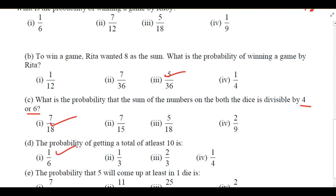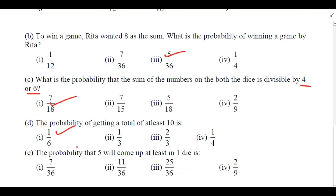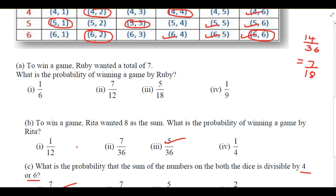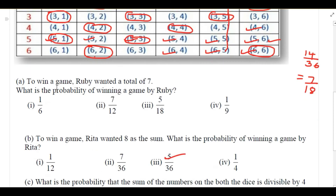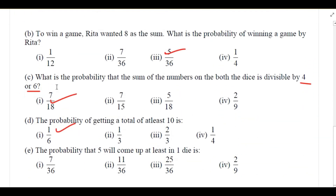The probability that 5 will come up at least in one die — there are 11 such possible outcomes. So the answer is 11 by 36.